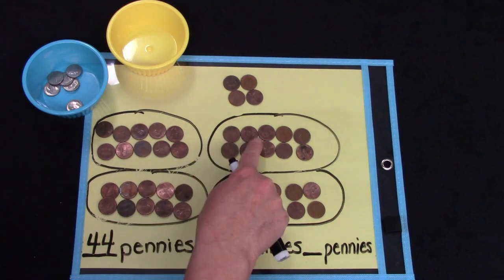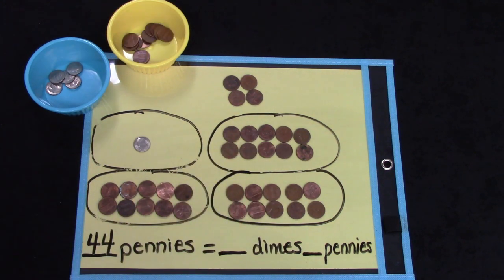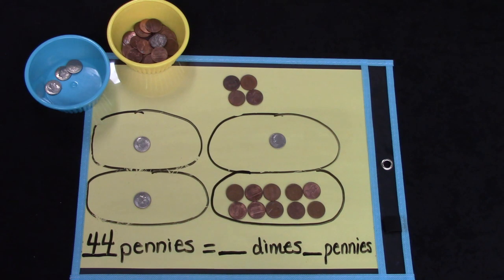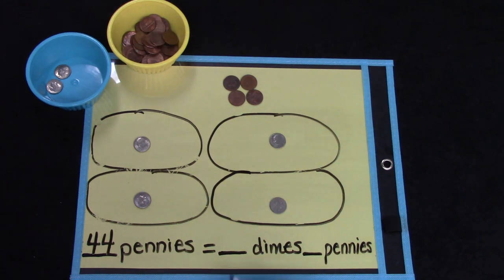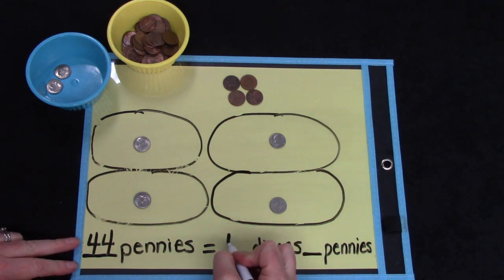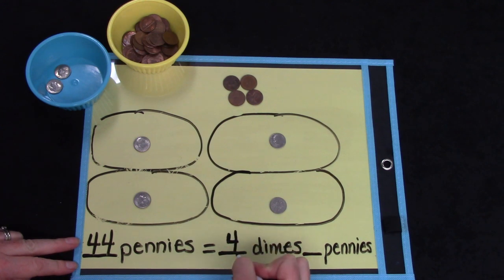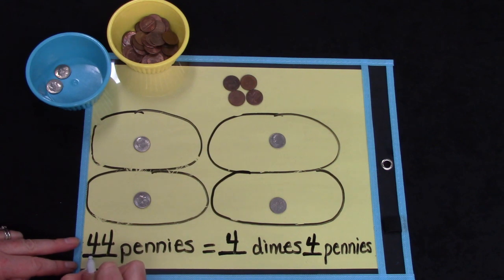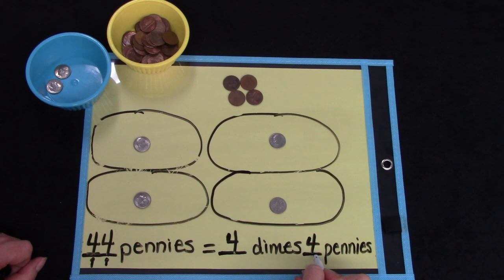Let's trade some of these pennies for dimes. One dime, two dimes, three dimes, and four dimes. 44 pennies is equal to four dimes and four pennies. This four is in our tens place and it tells us that there's four groups of ten. And this four is in the ones place. It tells us that there are four cents or four pennies.